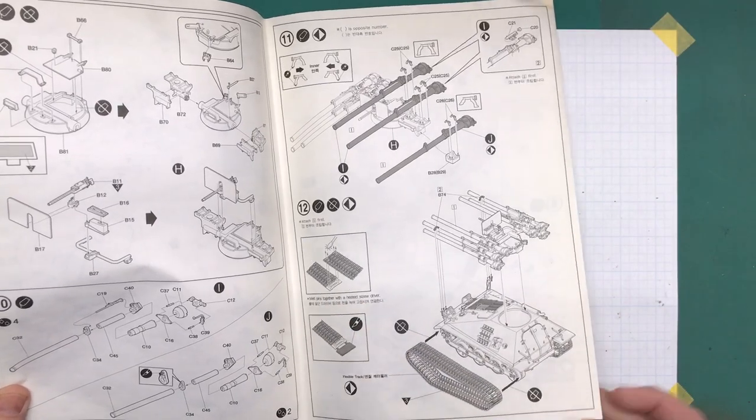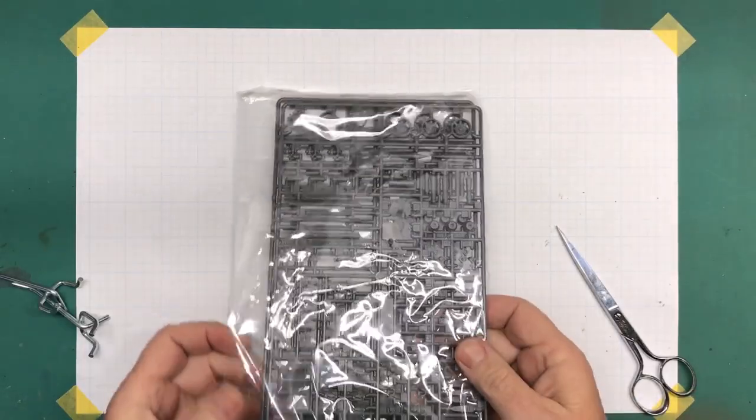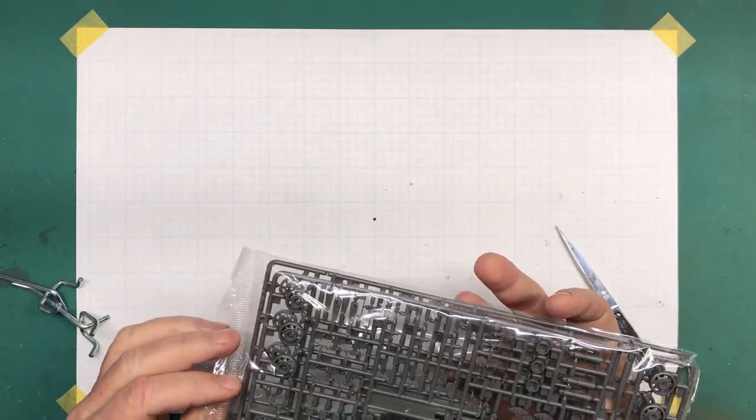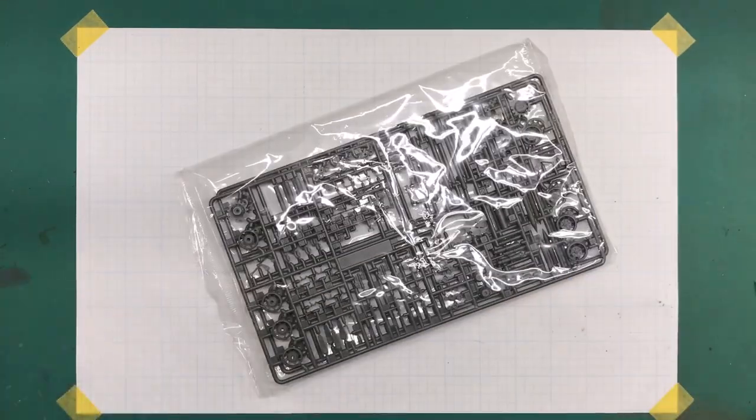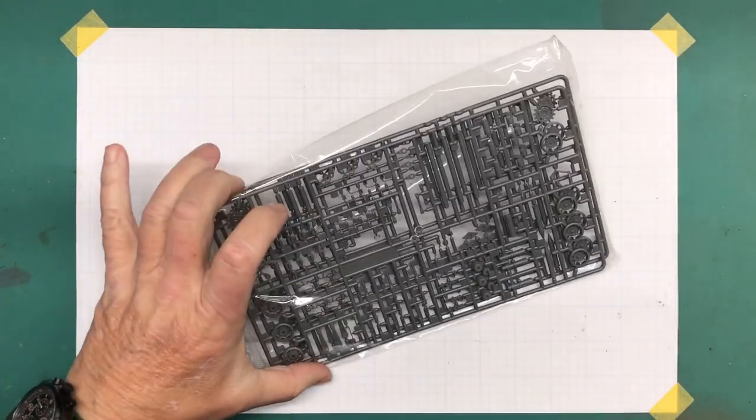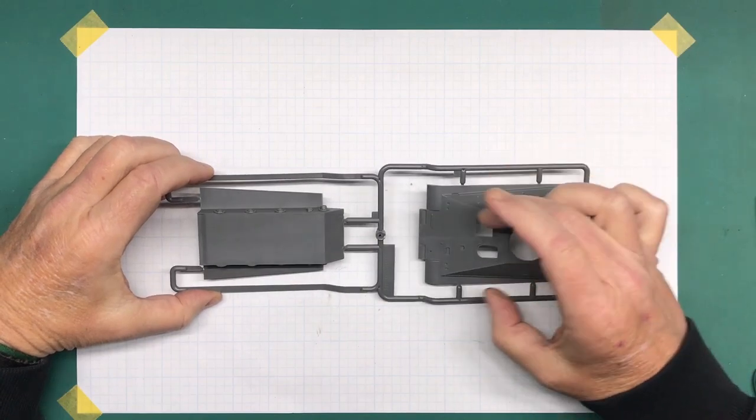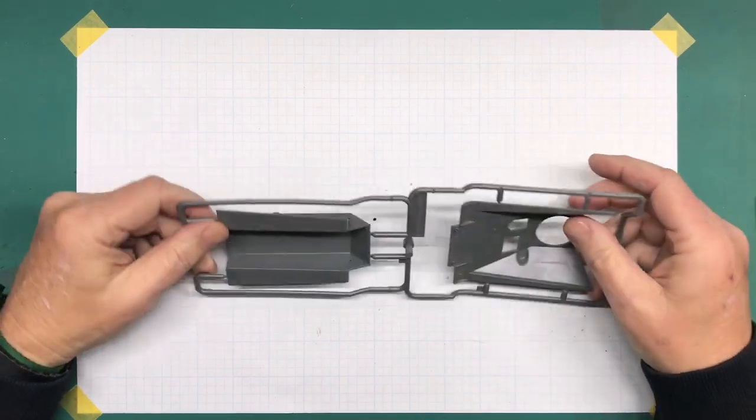That's the paper stuff. All the parts come in plastic bags, so let me get these cut out and then I'll go over them one by one briefly. First we have Sprue A, which is the upper and lower hull. All nice, one piece upper, one piece lower.